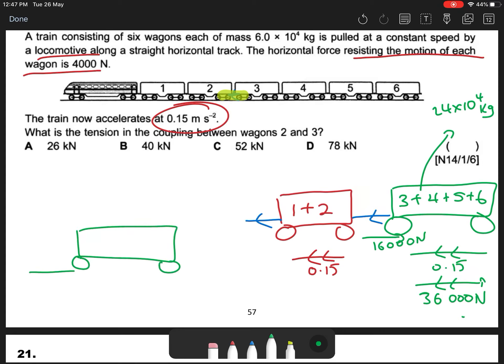So we look at wagons 3, 4, 5, and 6. I have 16,000 Newton frictional force, I have 36,000 Newton resultant force. So Tension minus 16,000 Newton must give me 36,000 Newton resultant force. So Tension will be 52,000 Newton. The answer is C, 52,000 Newton.